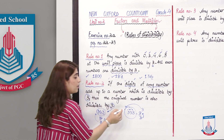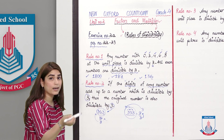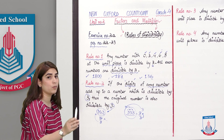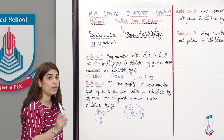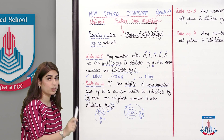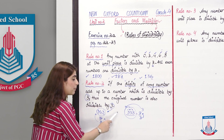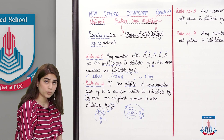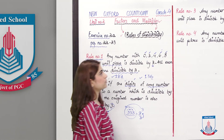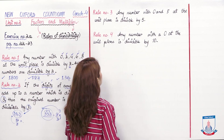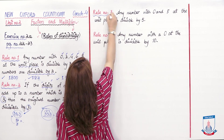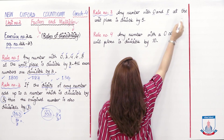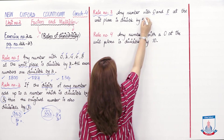To check if 3 is a factor of any number, we add all the digits. After adding, if the resulting value is divisible by 3, then we know the original number is also divisible by 3. Rule No. 3: Any number with 0 or 5 at the unit place is divisible by 5.